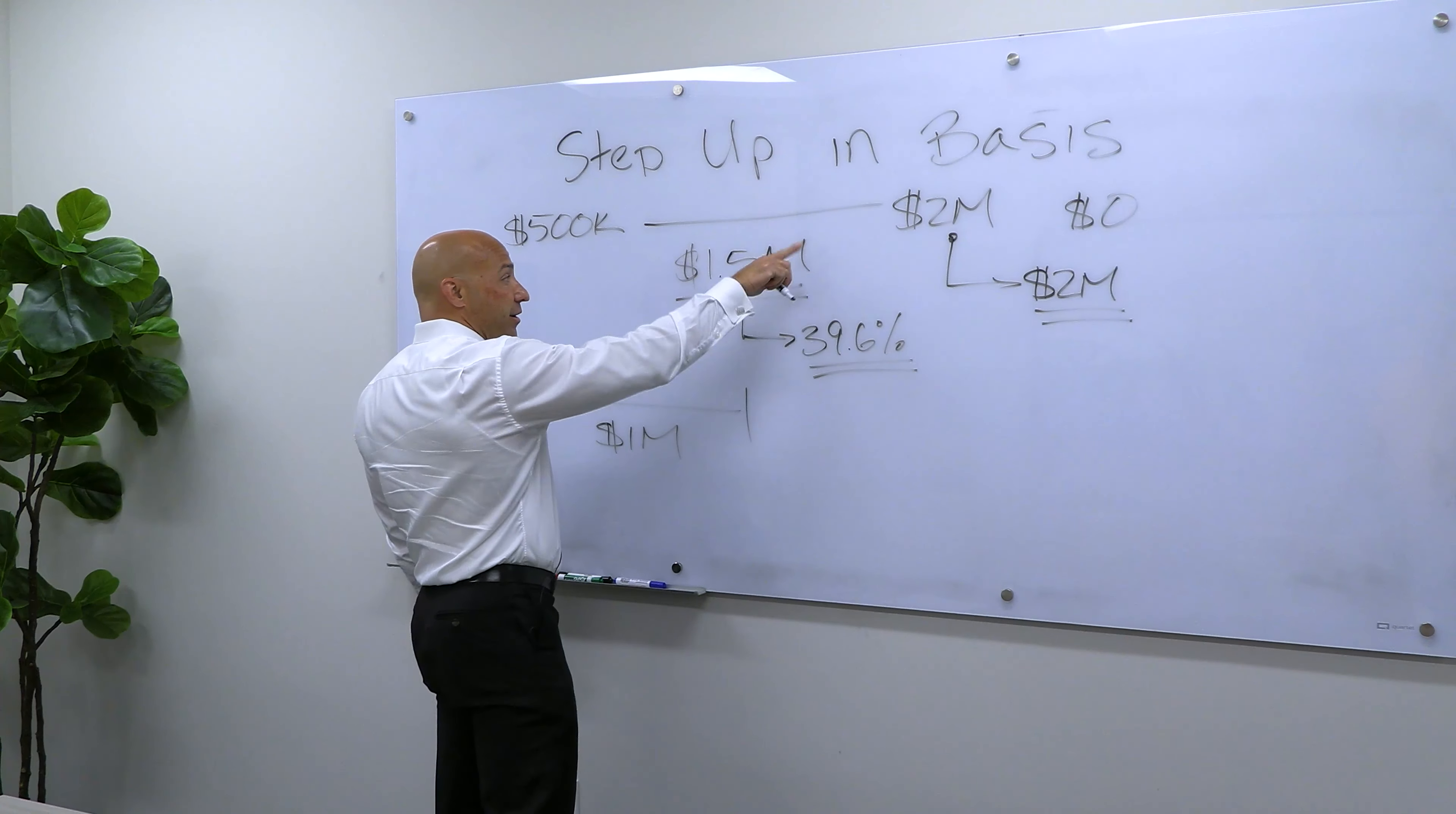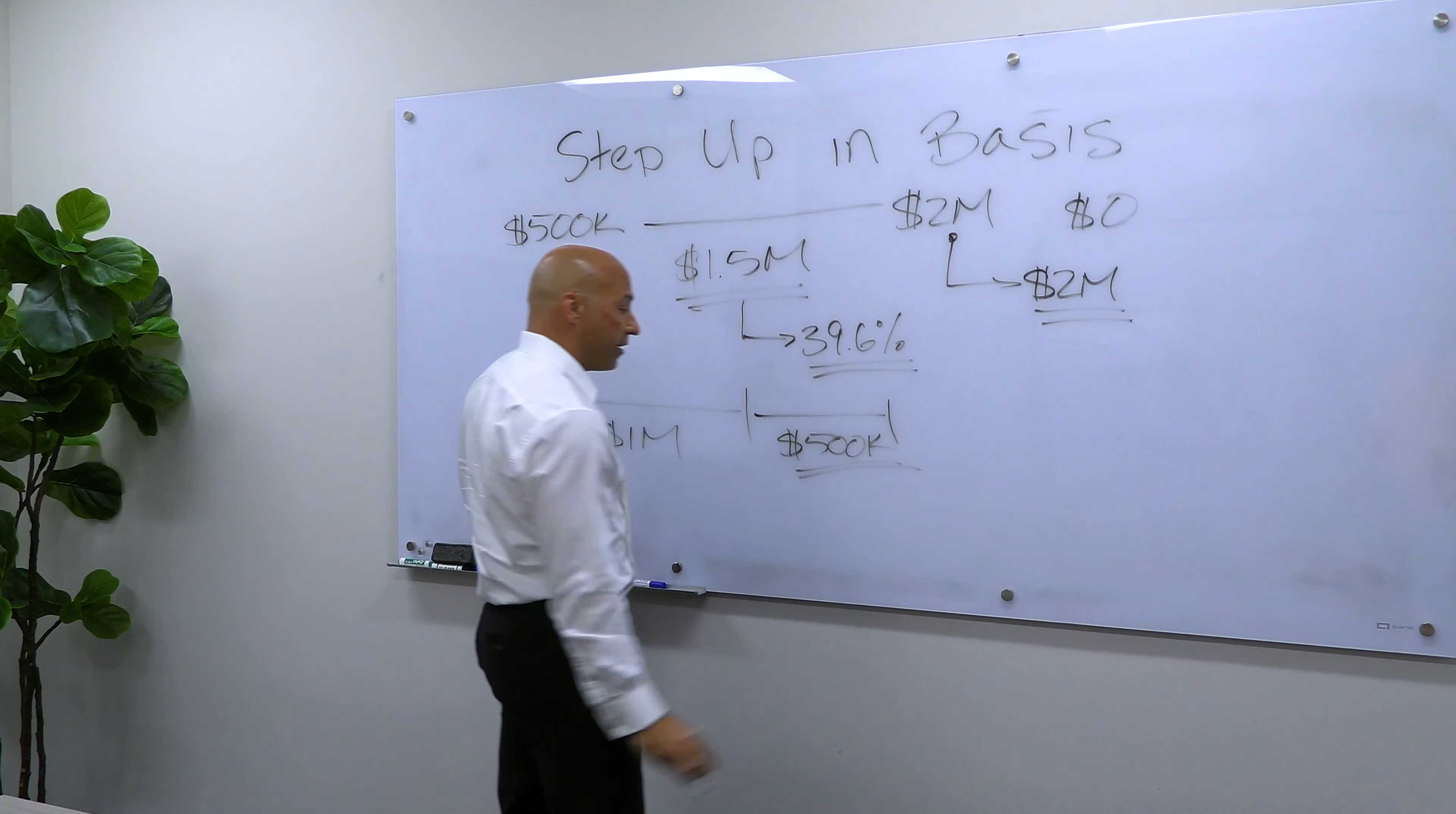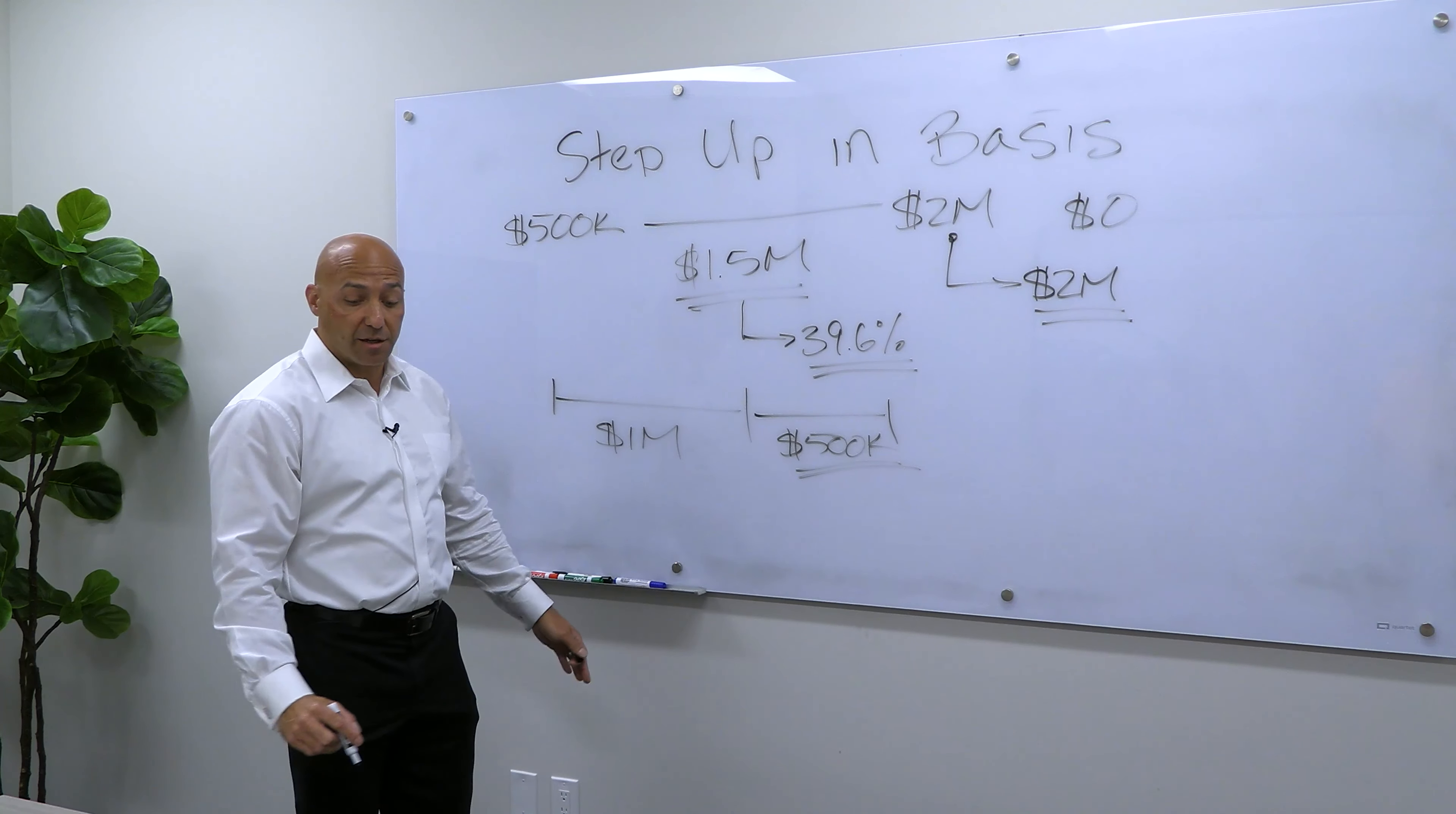So in this scenario, there's $1.5 million of gain. You'd get a million dollar step up. Anything above that would be taxable, which means that my children would pay taxes on the $500,000. So obviously not as good as $0 in taxes, but not as bad as this scenario here, but still something that we need to think about.